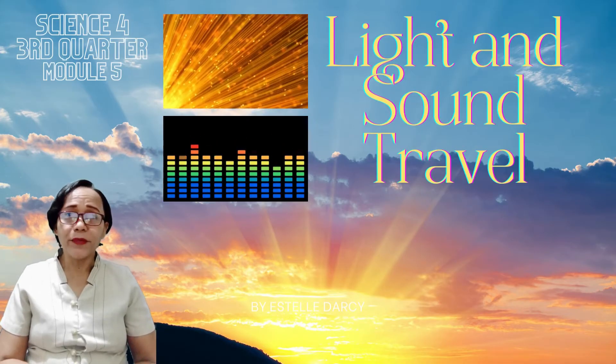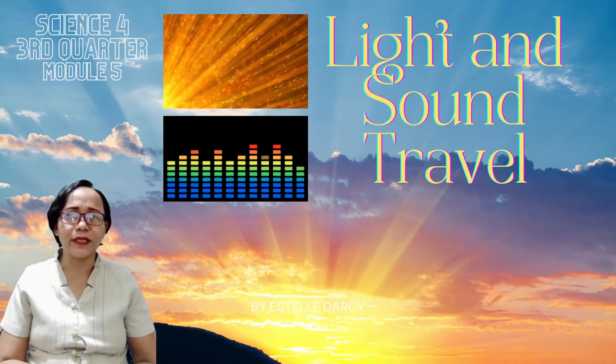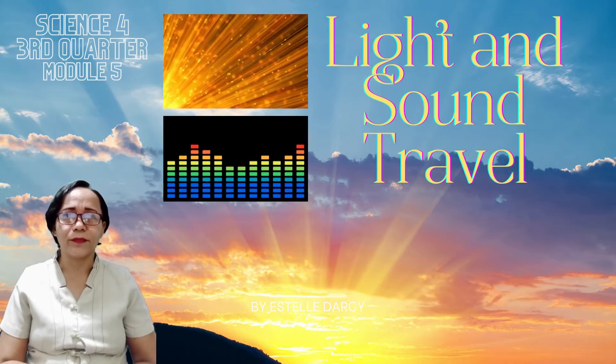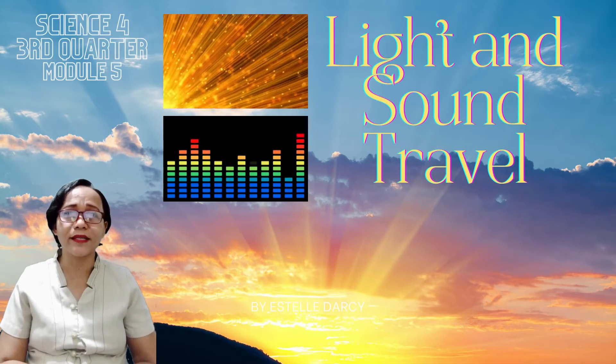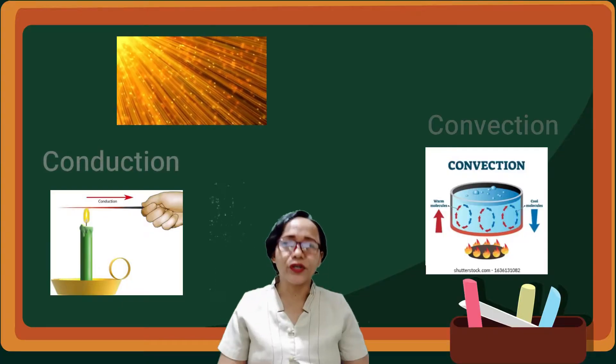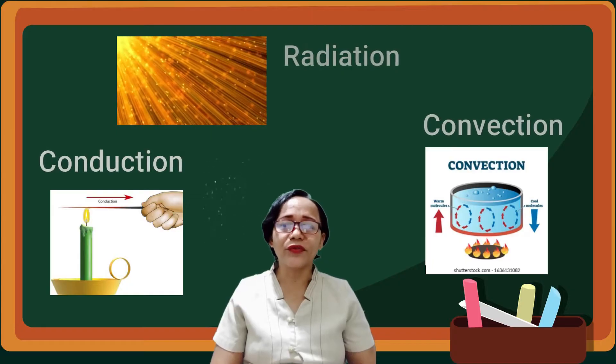In our previous lesson, you have learned how heat travels in different phases of matter. Heat transferred from warm substance to cool substance in three ways: conduction, convection, and radiation.